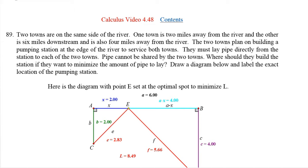Hello, this is Jack Jackson. We're going to look at an optimization problem in this video. This is a classic problem you'll see in a lot of textbooks. Two towns are on the same side of the river. One town is two miles away from the river and the other is six miles downstream and also four miles away from the river.